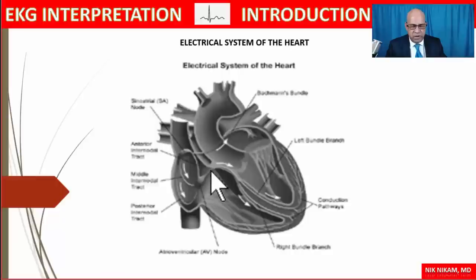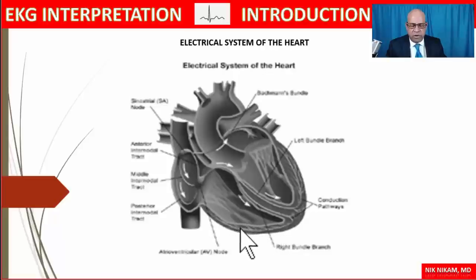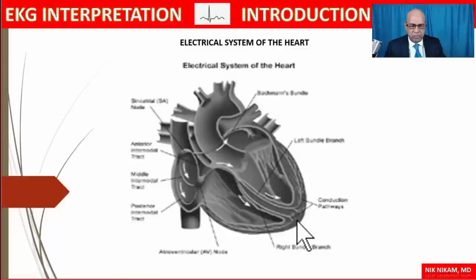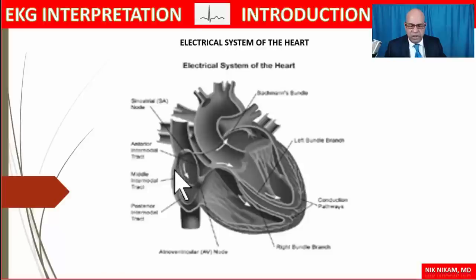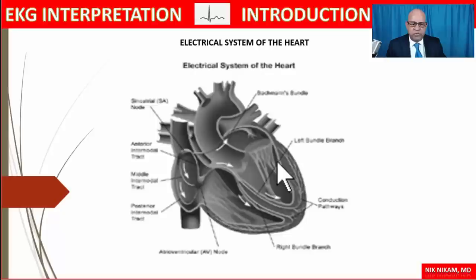Once the AV node transmits the impulse, it travels through the bundle of His — a common bundle dividing into the right and left bundles. These travel along the interventricular septum, through the poles and lateral walls, giving rise to a rich network of Purkinje fibers throughout the myocardium, activating the ventricles. When an impulse arrives from the sinus node, it activates the entire atrial musculature simultaneously — the all-or-none phenomenon — meaning both atria contract at the same time.